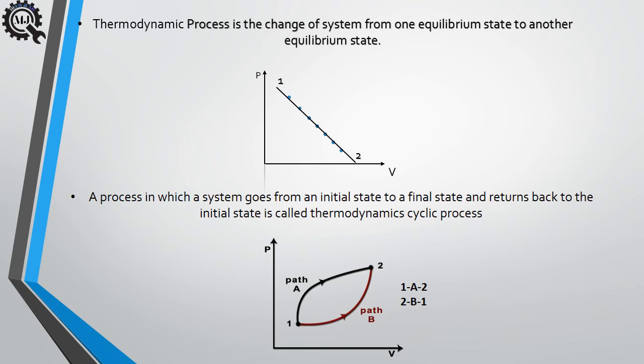Cyclic process: a process in which a system goes from an initial state to a final state and returns back to the initial state is called a thermodynamic cyclic process. Taking states 1 and 2 — expansion process from 1 to 2 and compression process from 2 back to 1. As we can see, the first state and final state are identical, hence it is called a thermodynamic cyclic process.